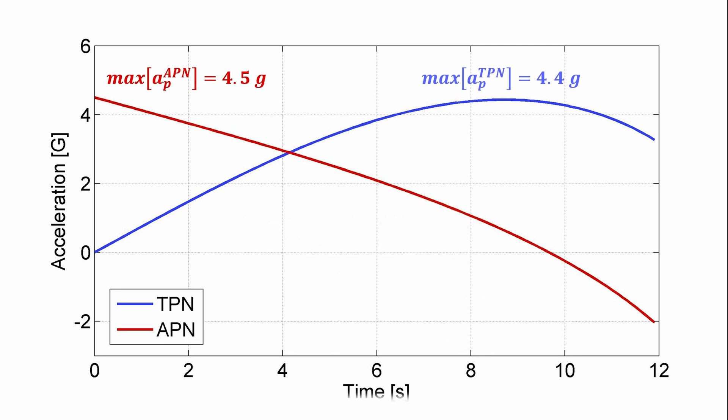So, augmented ProNav monotonically decreases for this engagement as time increases, but it doesn't stop at zero. Actually, it leads to a reversal of the acceleration direction going down to about negative 2 Gs near intercept. And this is consistent with what we observed in its trajectory as it had that slight inflection very late on in the engagement.